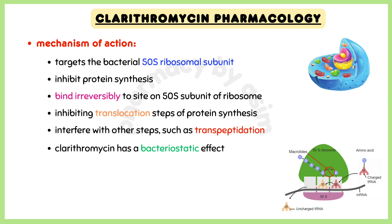Talking about the mechanism of action. Clarithromycin targets the bacterial 50S ribosomal subunit in order to inhibit protein synthesis. This drug binds irreversibly to a site on the 50S subunit of the bacterial ribosome, thus inhibiting translocation steps of protein synthesis.